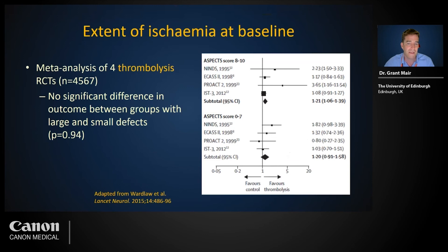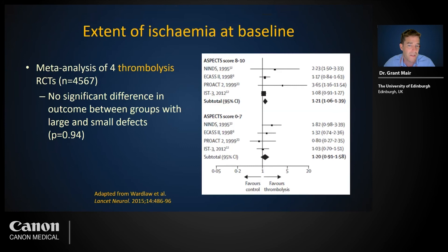This forest plot includes a meta-analysis of four thrombolysis RCTs measuring ischemic lesion size using ASPECTS. There is no significant difference in overall effect between patients with small lesions (ASPECTS 8–10) compared to those with larger lesions (ASPECTS 0–7), although the larger-lesion group is slightly underpowered. These data suggest all patients, regardless of lesion size by ASPECTS, can benefit from IV alteplase. However, the ESO recommends considering IV alteplase for patients under four and a half hours with more extensive early ischemic lesions only after balancing other imaging and clinical features.